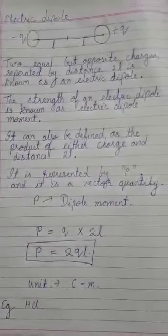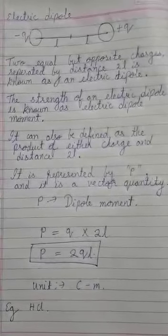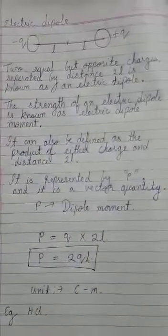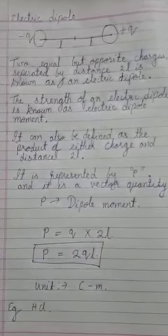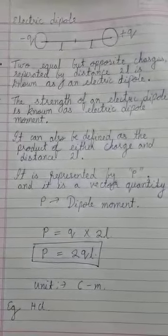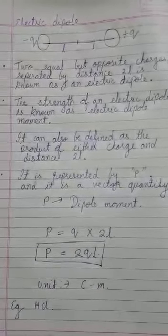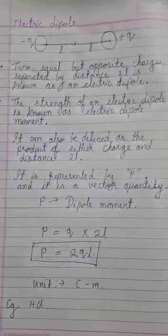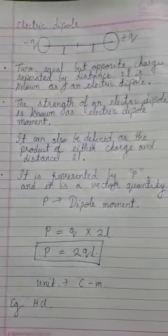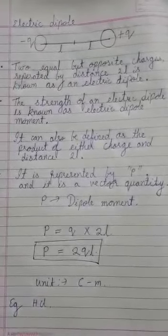We have two charges which are equal but opposite in nature — one positive, one negative — and if they are separated by a distance of 2L, we call it an electric dipole. For example, if the total distance is 10 cm, then 2L equals 10 cm and L equals 5 cm. Now, if we have to measure the strength of the dipole, we use a physical quantity called electric dipole moment.